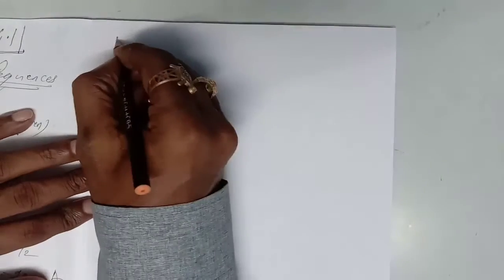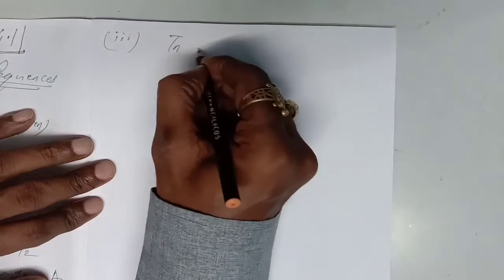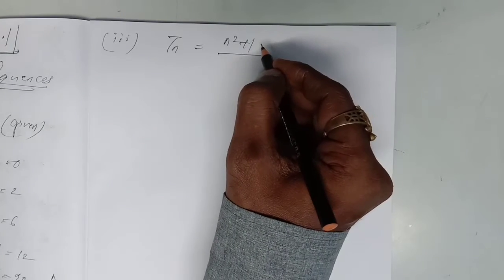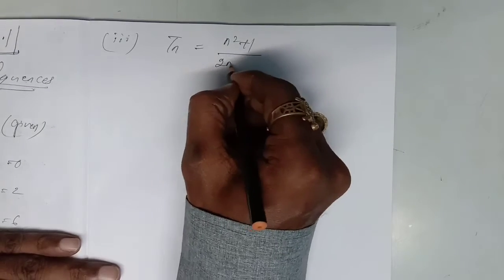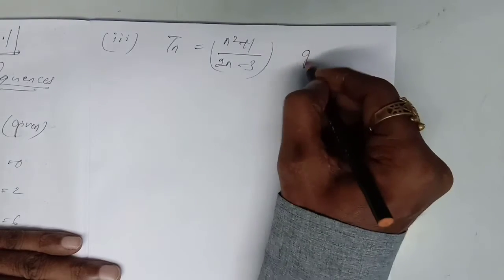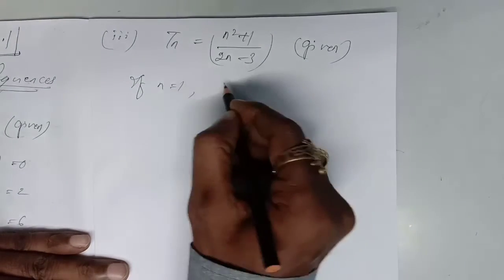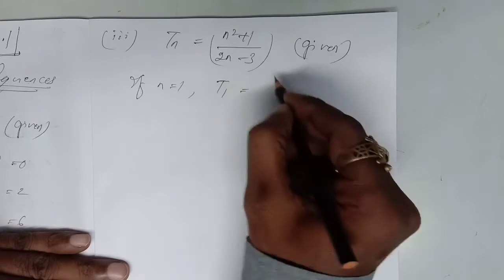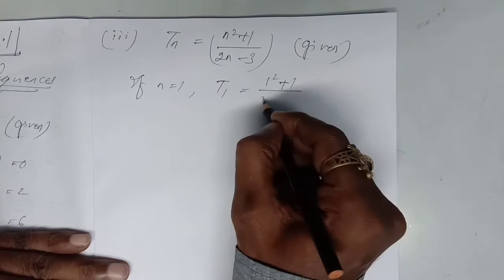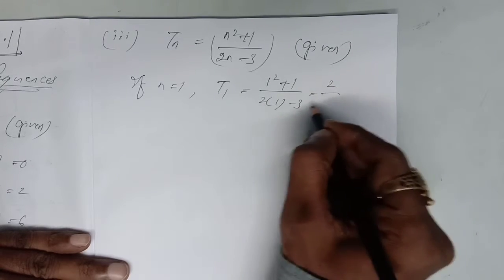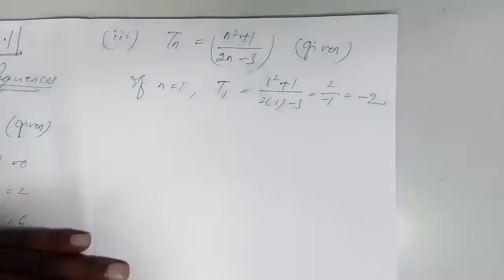Third part is also given. The nth term Tn = (n² + 1) / (2n − 3). This is the nth term given. If n equal to 1, the first term is: (1² + 1) / (2×1 − 3) = 2 / (2 − 3) = 2 / (−1) = −2. This is the first term.